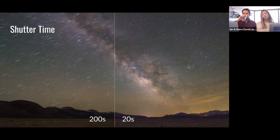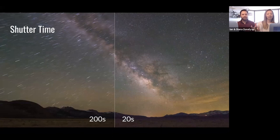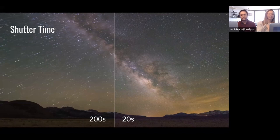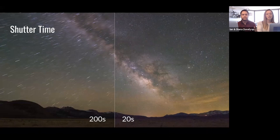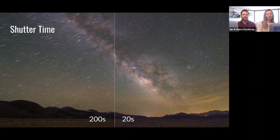For shutter time, this is something that is really important in astrophotography, understanding what effect the length of the shutter is going to have on our final image. If you have too long of an exposure, too long of a shutter time, something like our example on the left that we're showing here, what you'll start to experience is what we call star trailing.